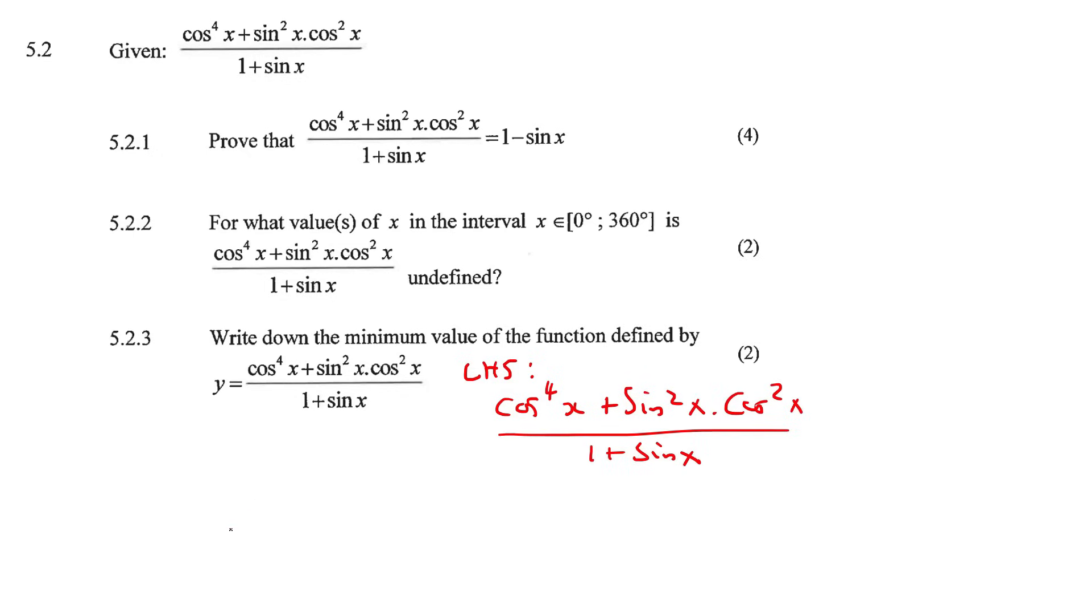First thing I would do at the top is just take out a common factor from these two terms. The common factor would be cos squared x, and then what you would be left with is another cos squared x plus sin squared, at the bottom 1 plus sin x.